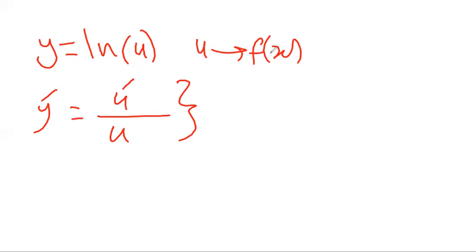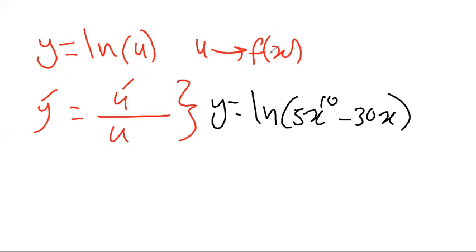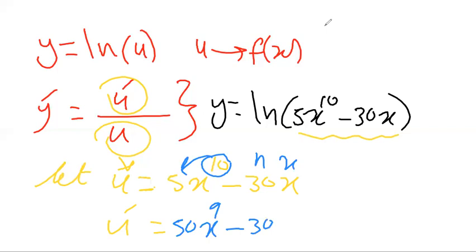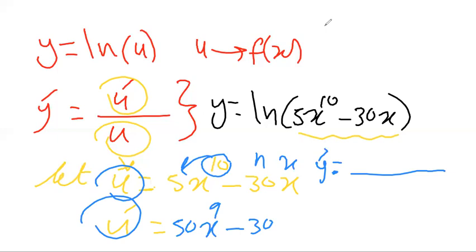For example, let y = ln(5x^10 minus 30x). Let u = 5x^10 minus 30x. Then derivative of u: using the power rule, 10 times 5 = 50 so 50x⁹, and the derivative of −30x is −30. So the derivative of y is (50x⁹ minus 30) over (5x^10 minus 30x).